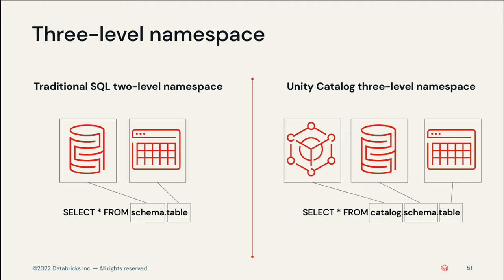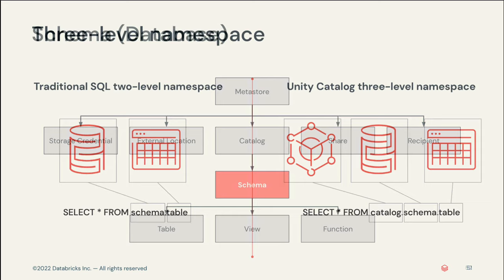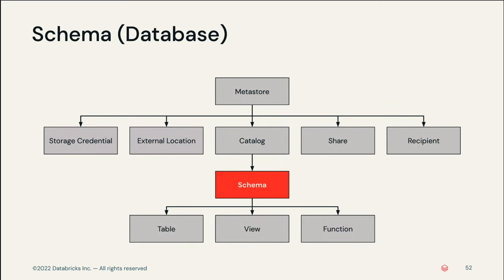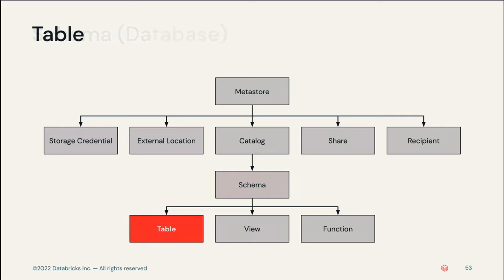This image illustrates how a three-level namespace compares to a traditional two-level namespace. Analysts familiar with traditional Databricks or SQL should recognize the traditional two-level namespace used to address tables within schemas. Unity Catalog introduces a third level to provide improved data segregation capabilities, and complete SQL references in Unity Catalog use three levels. A schema is part of traditional SQL and is unchanged by Unity Catalog — it functions as a container for data assets like tables and views, and is the second part of the three-level namespace. At the bottom layer of the hierarchy are tables, views, and functions.